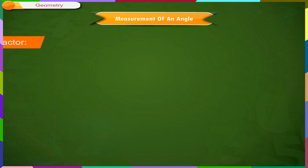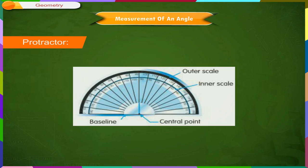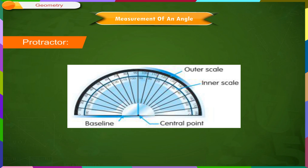Measurement of an Angle: Protractor. A protractor is a device we usually find in our geometry box. It is the most important tool to measure angles.